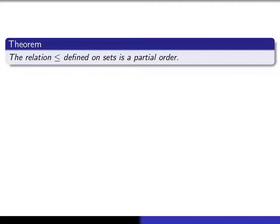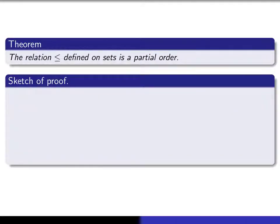So it's not difficult to prove that. Let's indicate what the proof is. I'll just include a sketch of it. The first thing you have to do is you have to show that it's reflexive. In other words, every set is related to itself, and that's true because the identity mapping on any set is an injection. It's even a bijection.